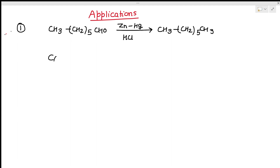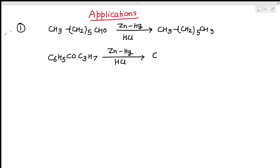Similarly, C6H5-CO-C3H7 (a ketone) treated with Zn/Hg and HCl is converted to C6H5-CH2-CH2-CH2-CH3.